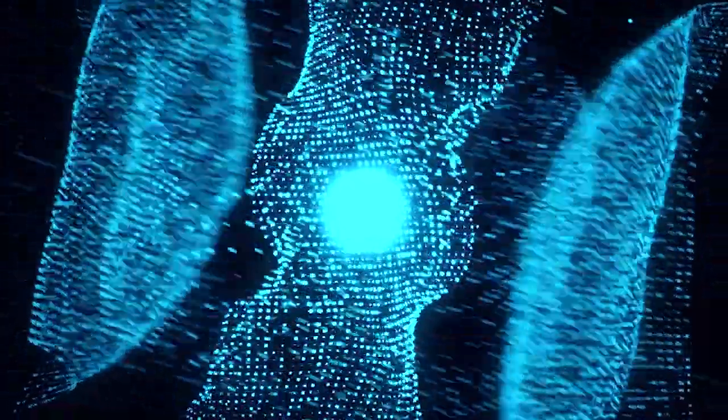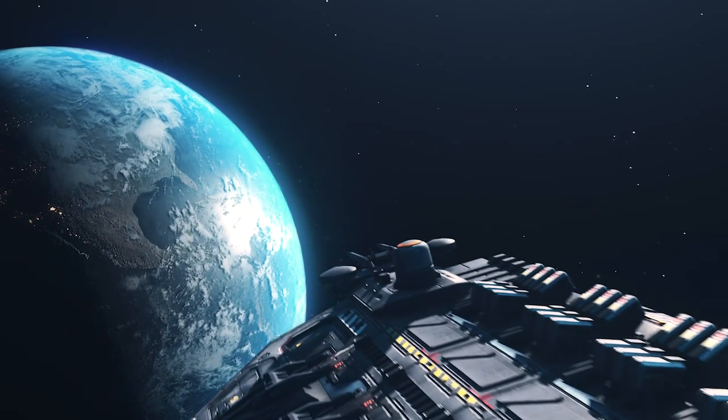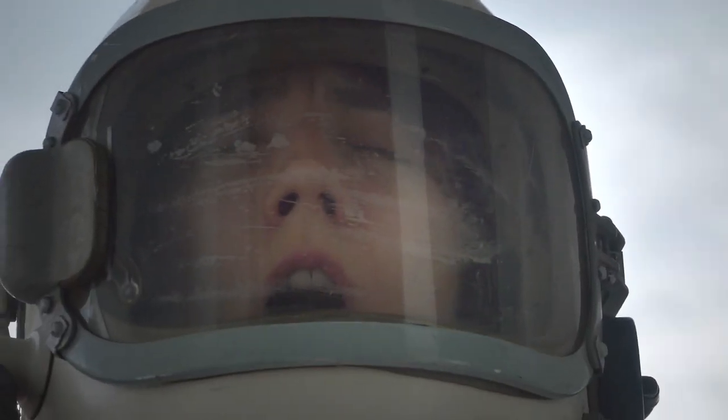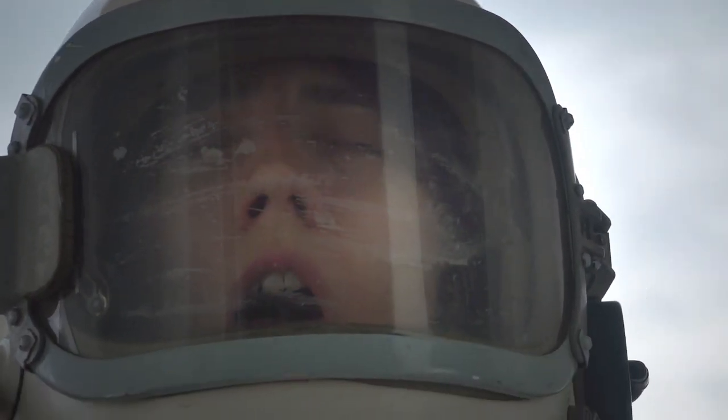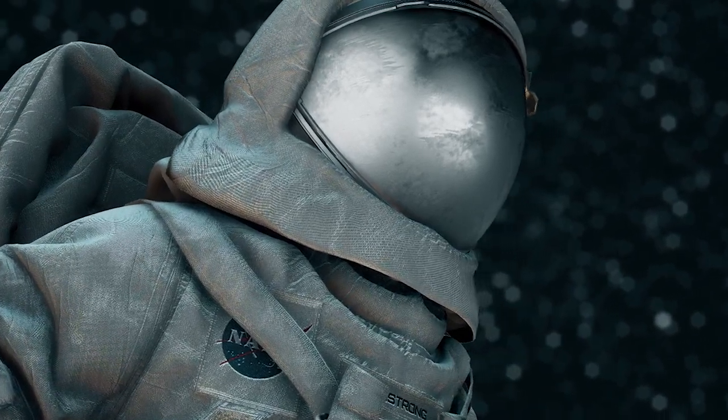Anyway, back to radiation in space. Spacecraft offer quite sufficient protection against radiation, but spacesuits, not so much. That is why astronauts only go out when the solar winds from the sun are not that harsh.